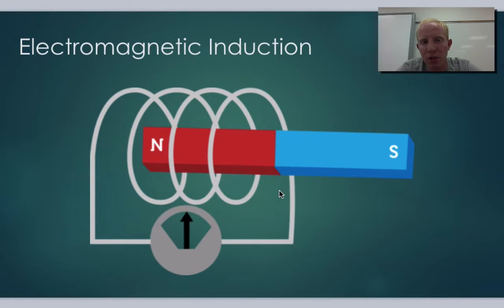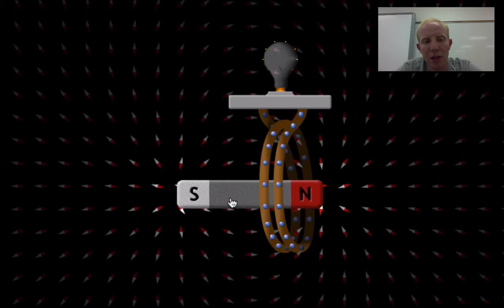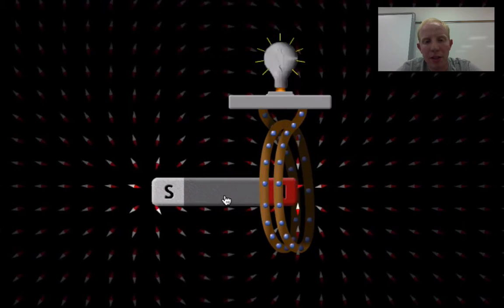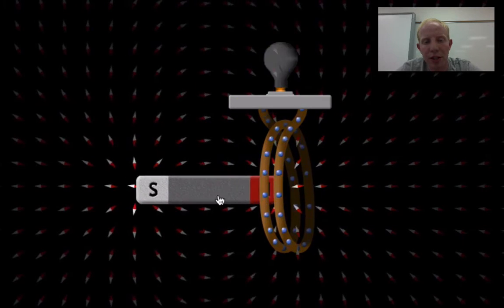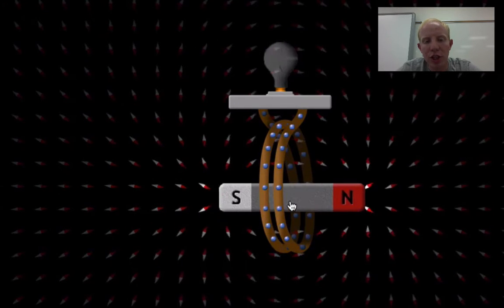Let me pull up a simulation that shows this. This is a FET simulation that shows that when we have a changing magnetic field, a current can be induced. We can see that the light bulb is shining as we move the magnet in and out. But notice it has to be a changing magnetic field.